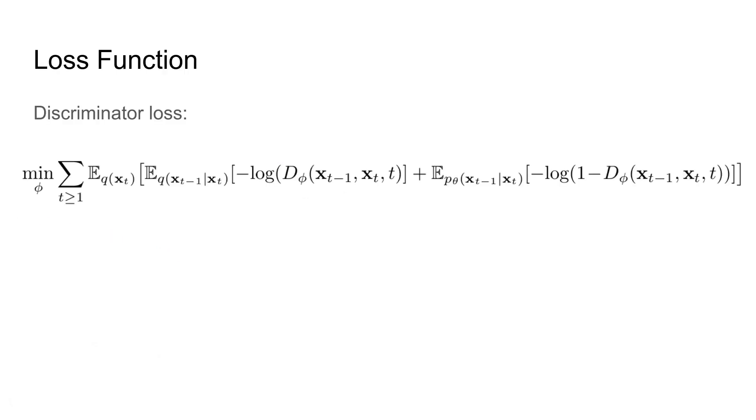Now in order to train this network we need a loss function. Discriminator loss is the same as in traditional GANs. The discriminator tries to maximize the probability of labeling the true samples as real and the generator samples as fake. In this formula we minimize the negative log likelihood, which is essentially the same thing as maximizing the probability.